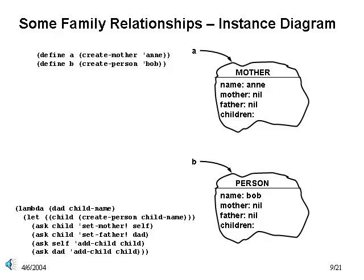Let's look at how the have-child method works, using an instance diagram to help us keep things straight. As you write object-oriented code, you will find such instance diagrams indispensable to keep track of what your system is doing. As shown here, we have the A and B instances, resulting from the evaluation of the two define expressions creating these objects. We want to ask what happens when we evaluate and then apply the body of the have-child method from inside the A instance.